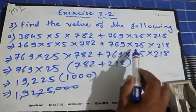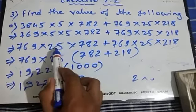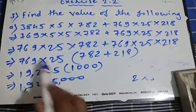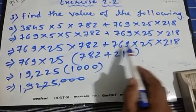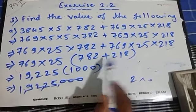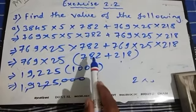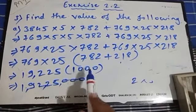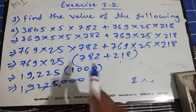Rewriting, we get 769 × 5 × 5 × 782 + 769 × 25 × 218. Then 5 × 5 = 25, so this becomes 769 × 25 × 782 + 769 × 25 × 218. Since 769 × 25 appears in both terms, we take it common: 769 × 25 × (782 + 218). Now 769 × 25 = 19,225 and 782 + 218 = 1000, so 19,225 × 1000 = 1,92,25,000.